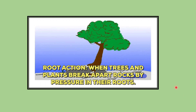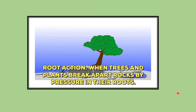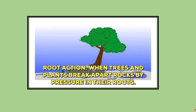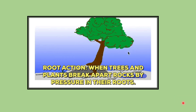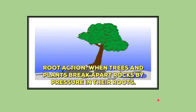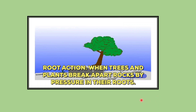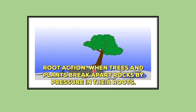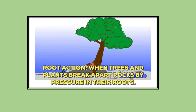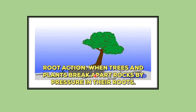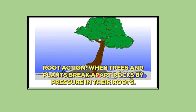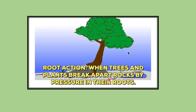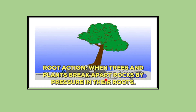Apart from physical and chemical weathering, biological weathering also leads to the breaking of rocks and ultimately turning them into soil. Biological weathering is brought about by plant roots, burrowing animals, and even human activities. Here we can see how the roots of trees, as they grow in size, cause cracks in the rocks and ultimately break them into smaller pieces. The cracks gradually widen and break the rocks into smaller and smaller pieces, giving way to the formation of soil.